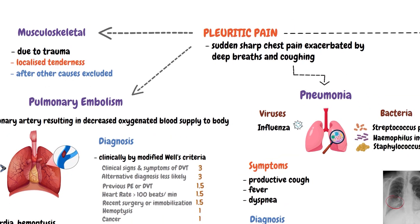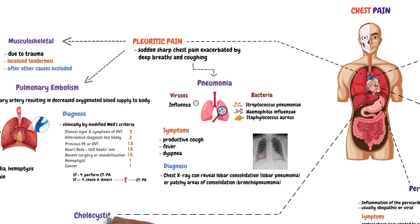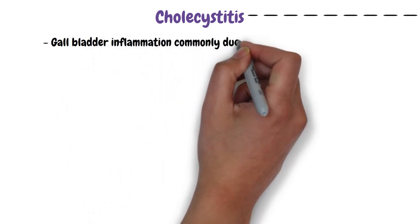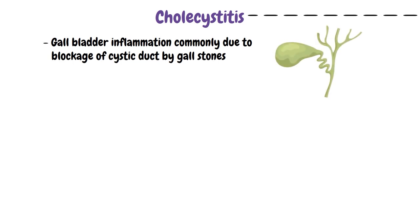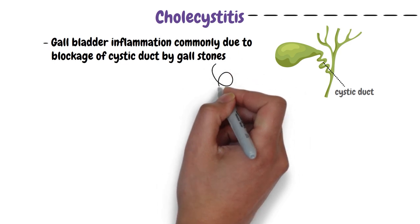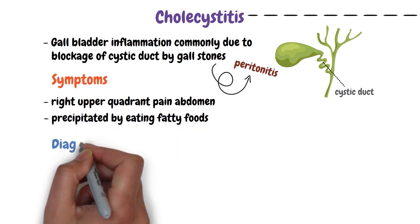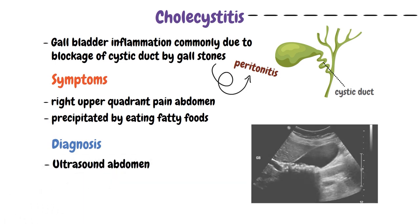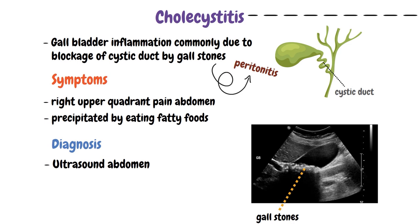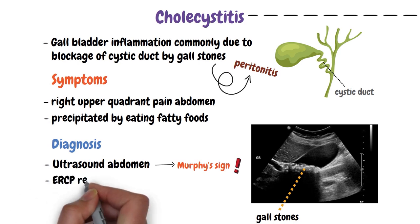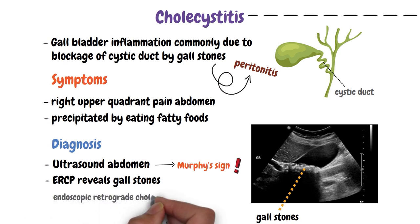Chest pain may also arise due to infection of the gallbladder, known as cholecystitis. The infection usually occurs due to blockage of the cystic duct by gallstones. The cystic duct connects the gallbladder to the common bile duct, and the infection can spread into the peritoneum to cause peritonitis. Symptoms include pain in the right upper quadrant of the abdomen, precipitated by eating fatty foods. Diagnosis can be made by abdominal ultrasound, which can reveal gallstones at the neck of the gallbladder. Pressing the probe over the gallbladder area can elicit Murphy's sign — when the patient breathes in, the inflamed gallbladder descends and contacts the probe, causing the patient to wince. ERCP, short for Endoscopic Retrograde Cholangiopancreatography, also reveals gallstones in the biliary tract.